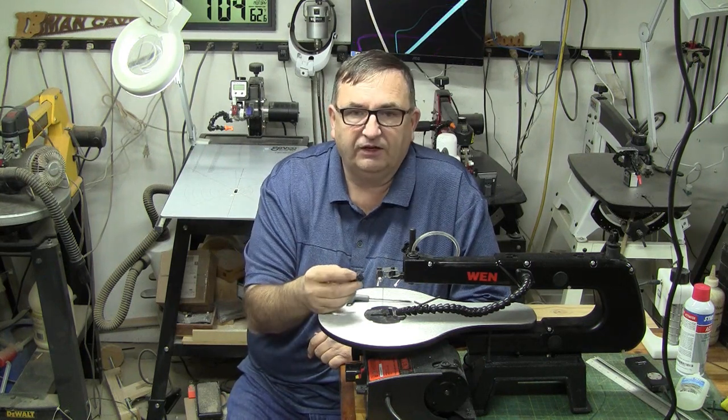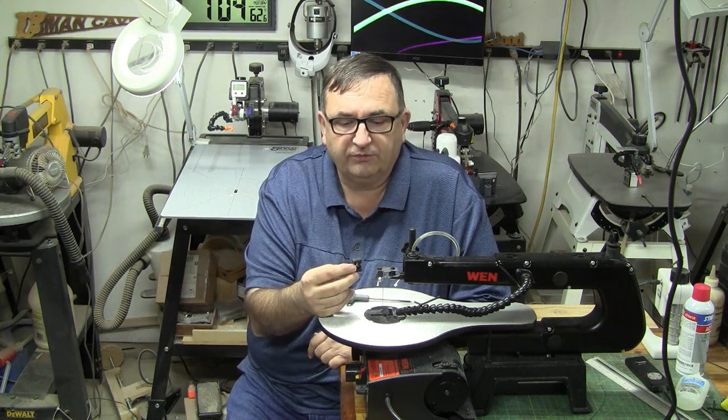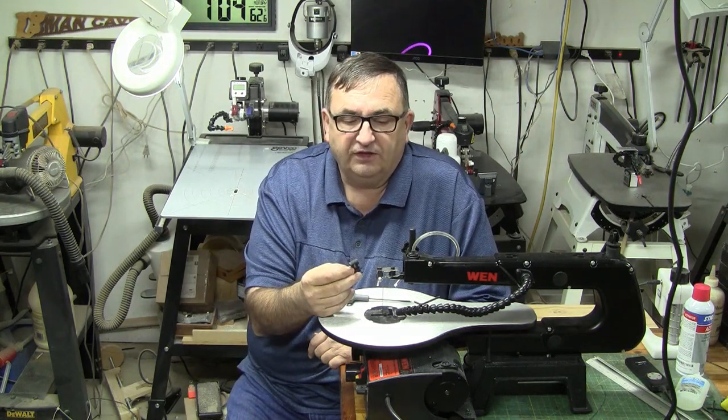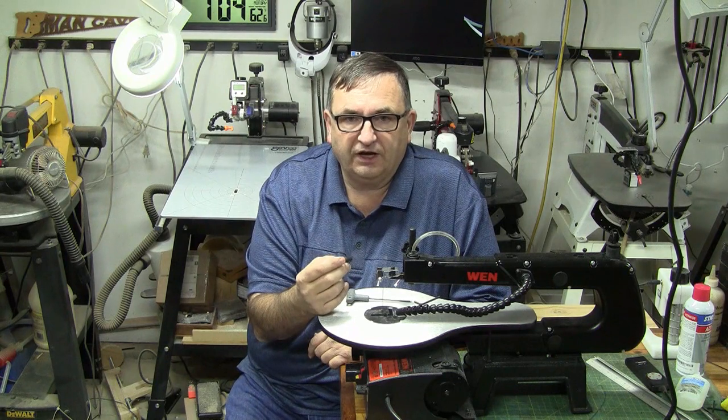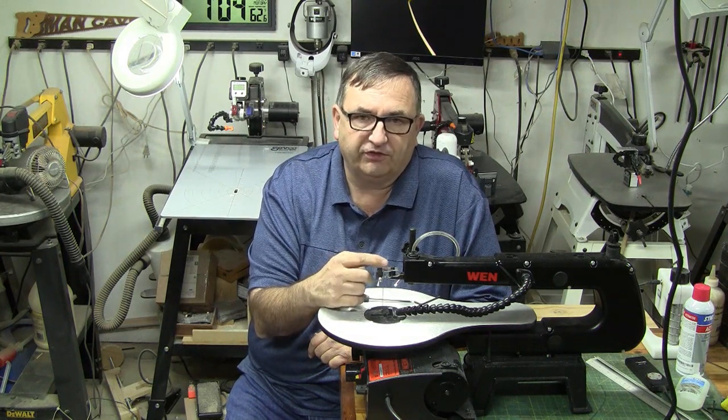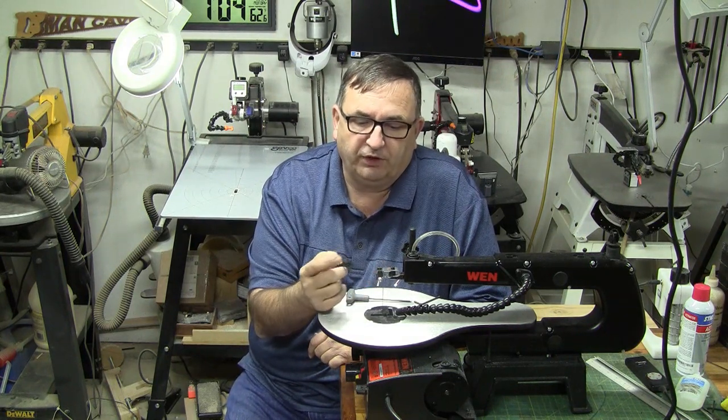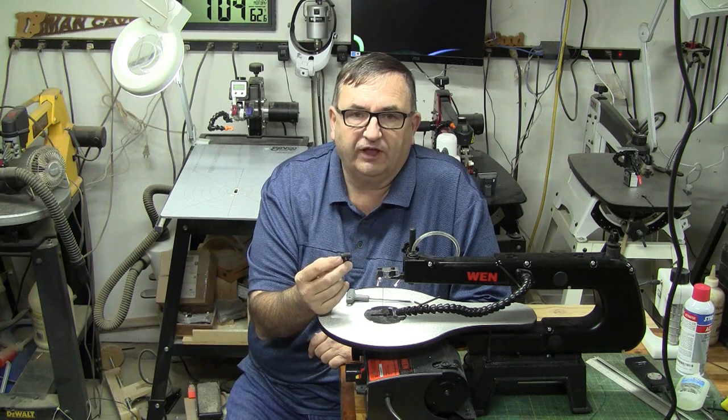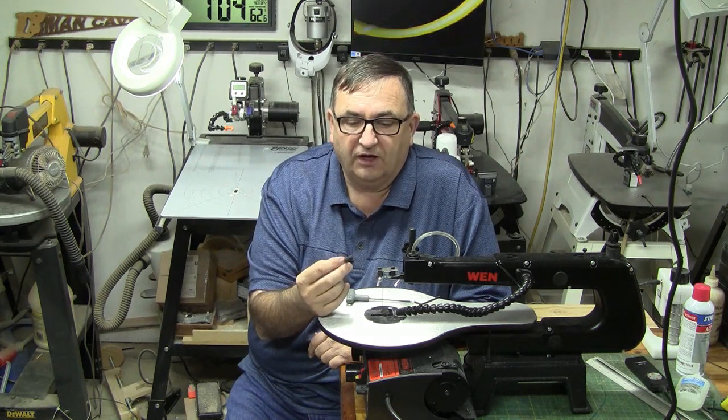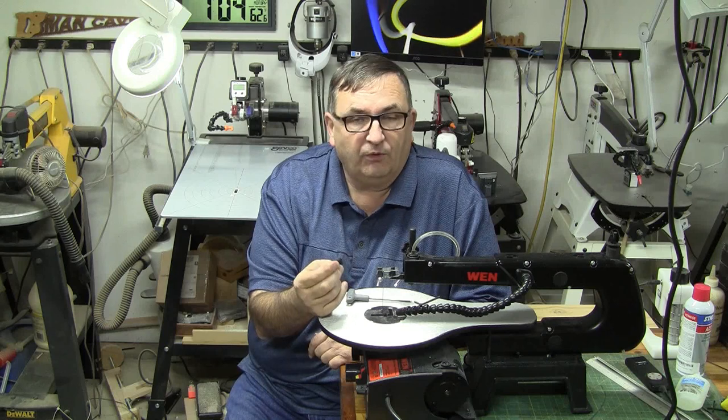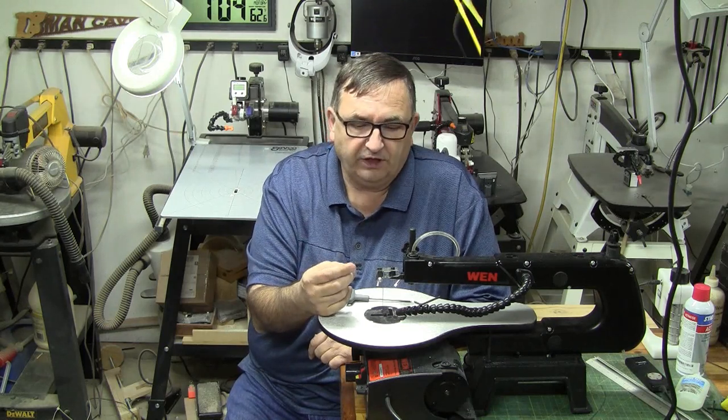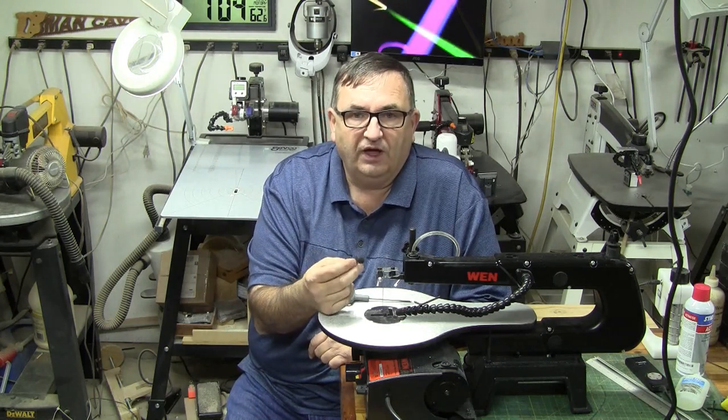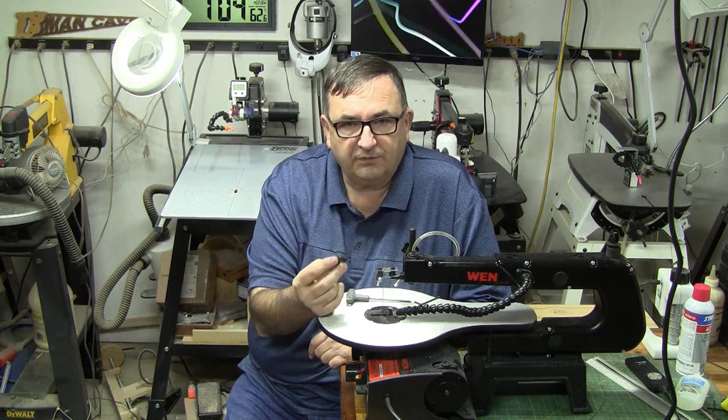I noticed on the WEN site, actually a reader sent me the link, that for the WEN 3920, which is the saw that this 3921 replaced, they had a set of clamps specifically for plain end blades. I wasn't sure they were going to fit, but I went ahead and ordered them just to find out. I've put them on, they do fit, let me show you how they work.